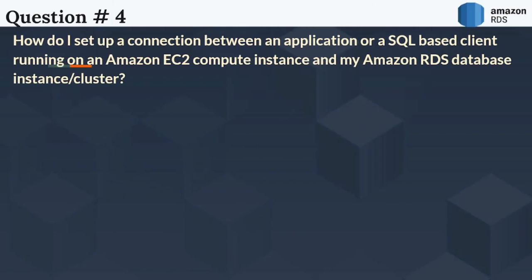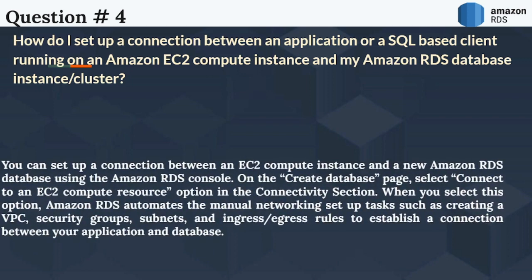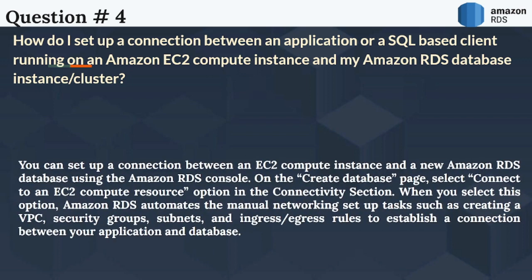The next question is: How do I set up a connection between an application or a SQL-based client running on an Amazon EC2 compute instance and my Amazon RDS database instance cluster? You can set up a connection between an EC2 compute instance and a new Amazon RDS database using the Amazon RDS console. On the Create Database page, select the Connect an EC2 Compute resource option in the Connectivity section. Amazon RDS automates manual networking setup tasks such as creating a VPC, security groups, subnets, and ingress-egress rules to establish a connection between your application and database.